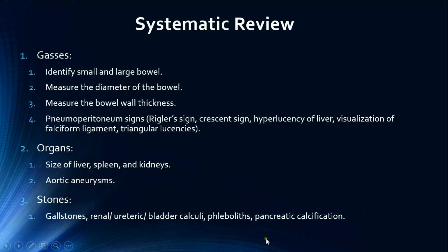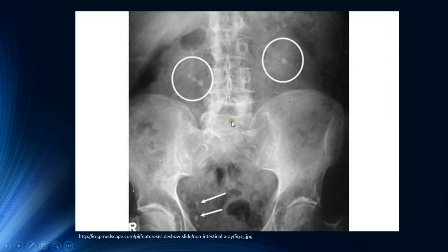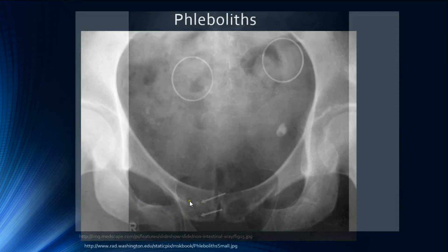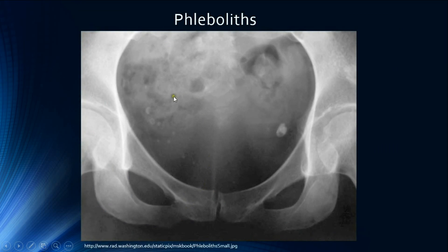Gallstones are usually radiolucent and therefore not visible on abdominal radiographs, whereas most urinary stones are radio-opaque and visible. Here is a KUB showing renal stones as small opacities bilaterally — the right kidney is slightly lower than the left. There are also phleboliths indicated by white arrows in the pelvis, which are venous calcifications.